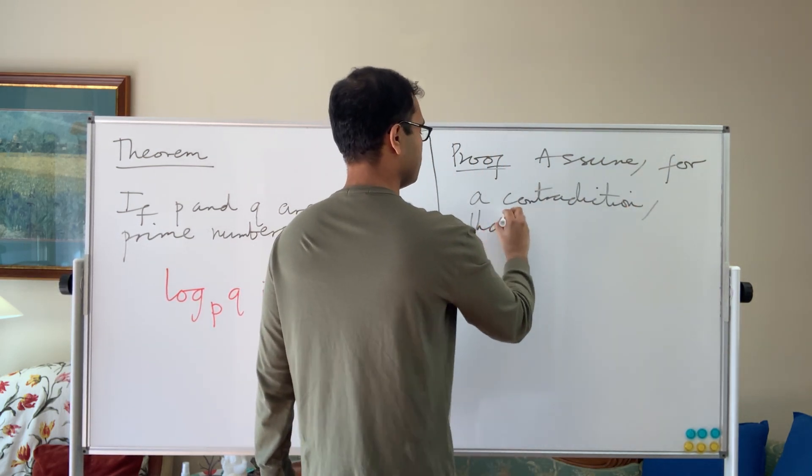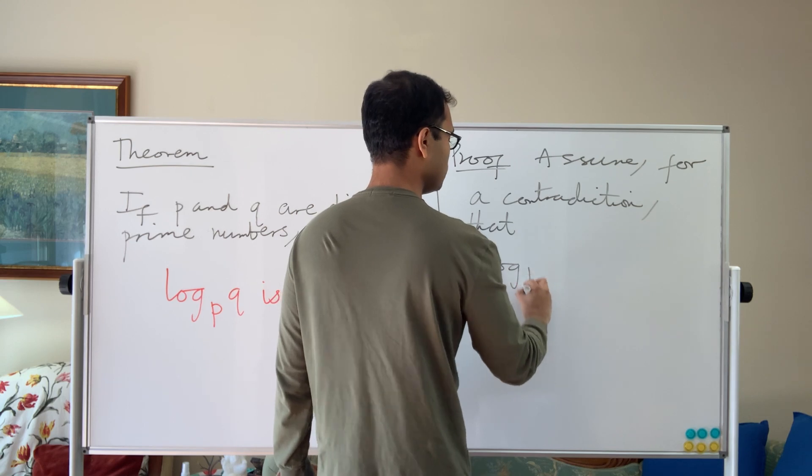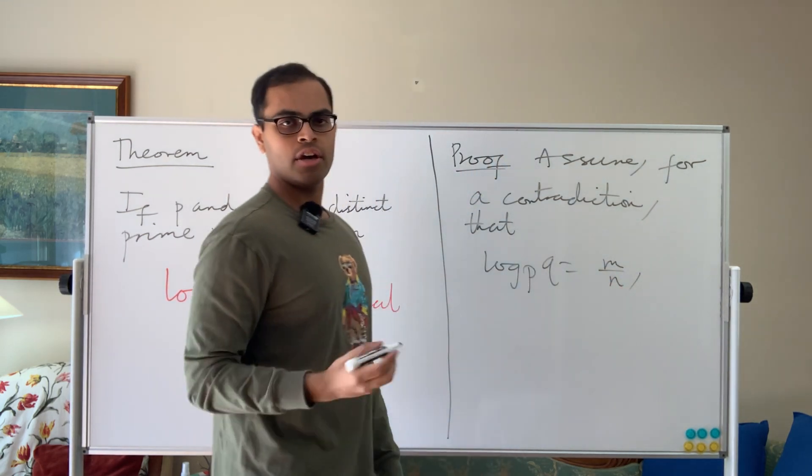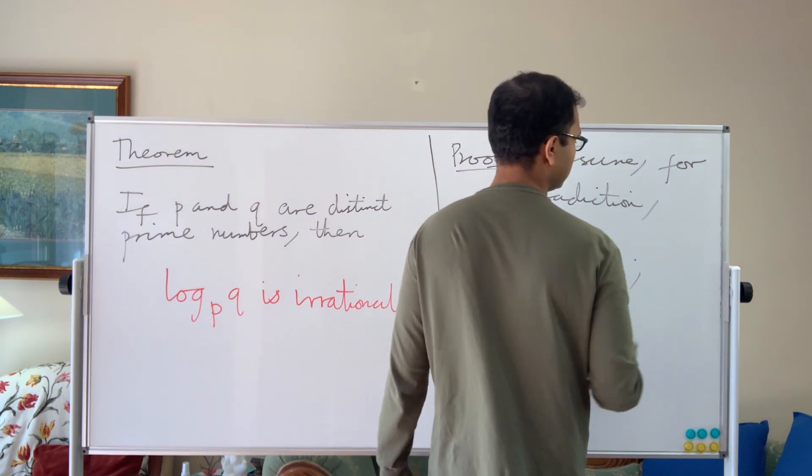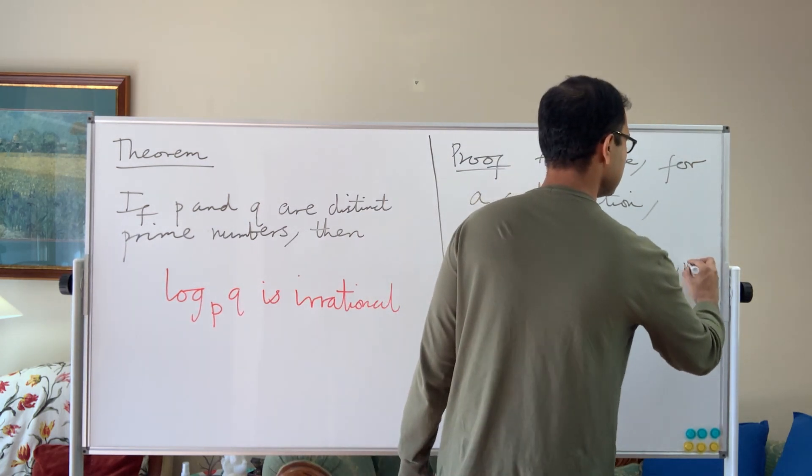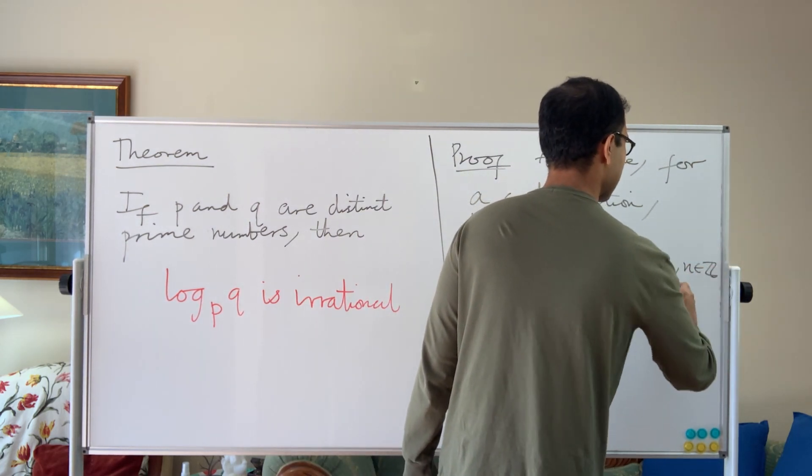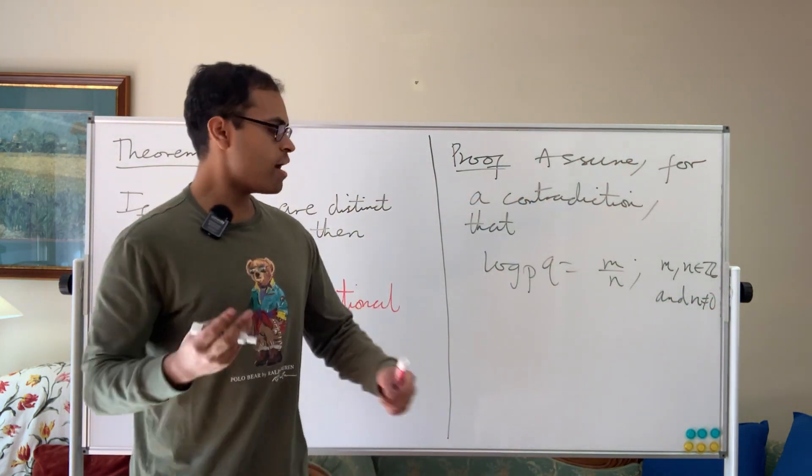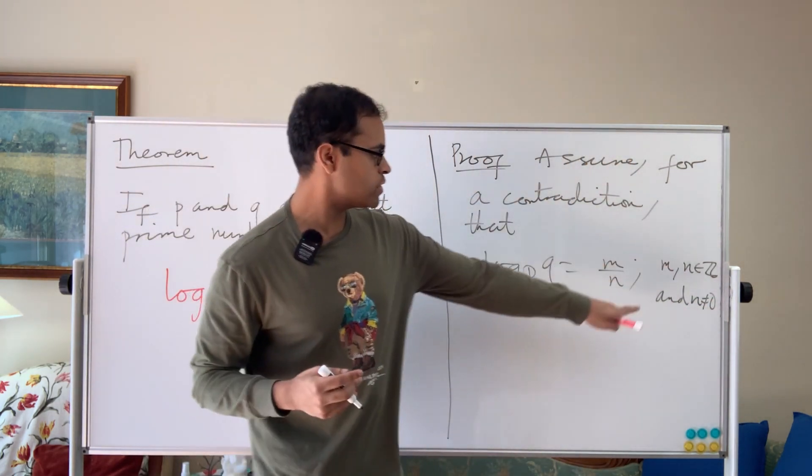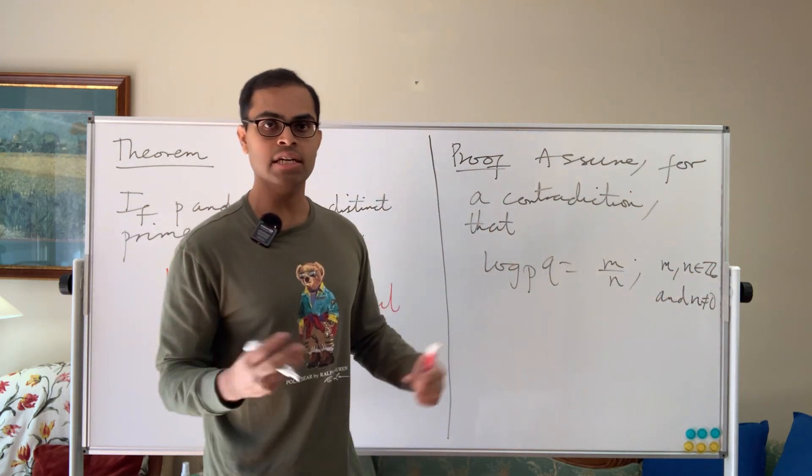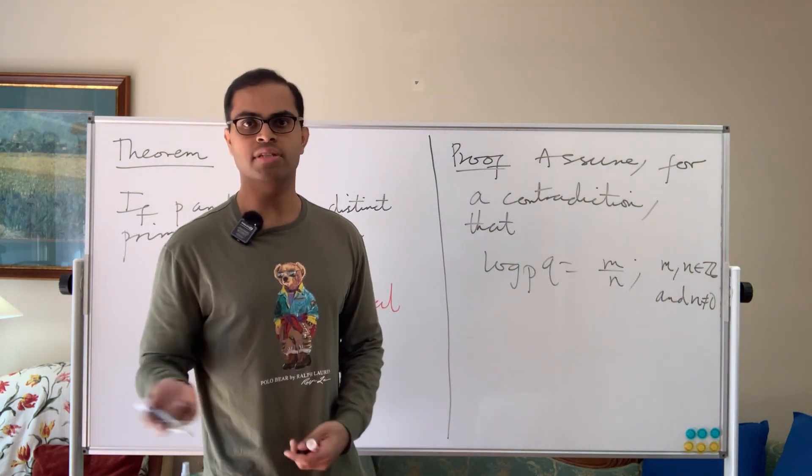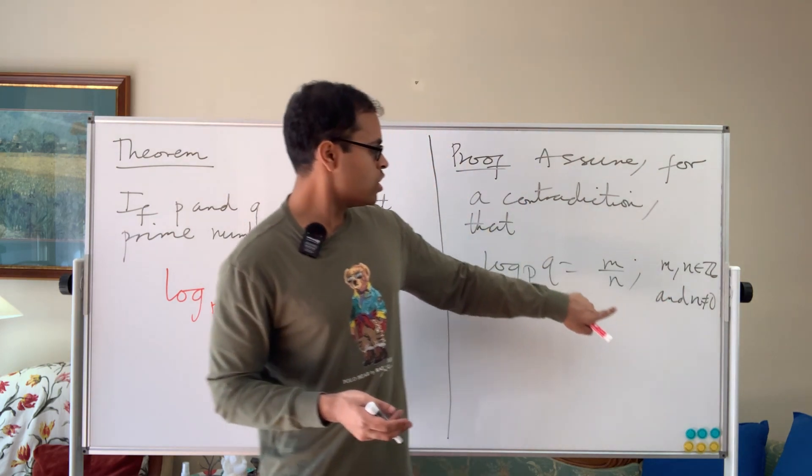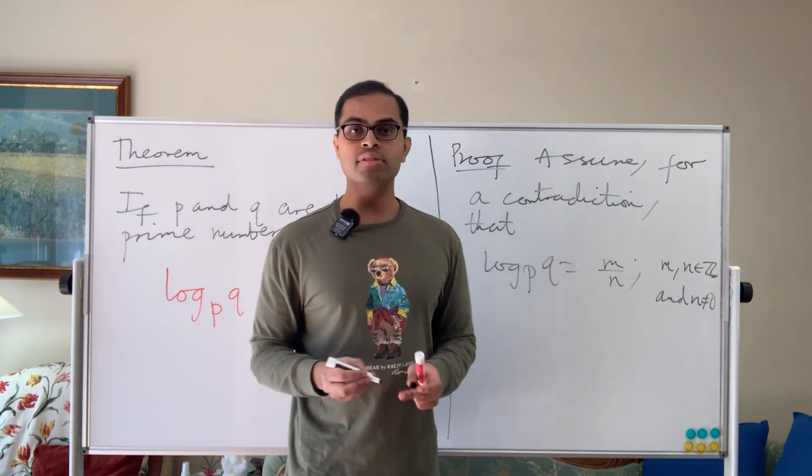So here's the proof. It's proof by contradiction. So we typically say assume for a contradiction that we can write this as a ratio of two integers where the denominator is non-zero. That log to the base p of q is going to equal m over n, where m and n are integers and n is non-zero. So this notation here, if you haven't seen it, I'm trying to introduce you to stuff. So m and n are in Z. This means Z is the integers, all the negative integers, positive integers, and zero. And so m and n are here and n is non-zero.